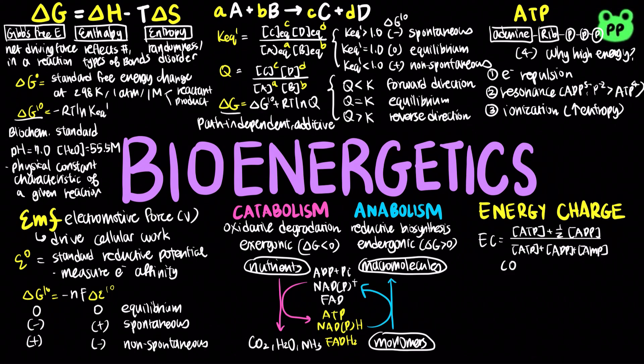The value of energy charge falls between 0 and 1. A cell with high energy charge means that it has excess free energy. Therefore, anabolic biosynthetic processes will dominate. This is indicated by the abundance of ATP, citrate, NADH, NADPH, acetyl-CoA, and succinyl-CoA.